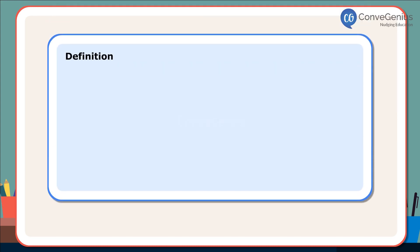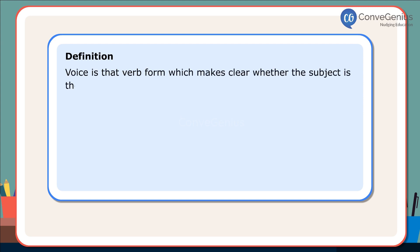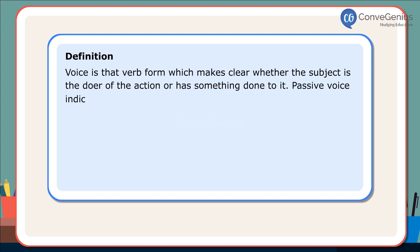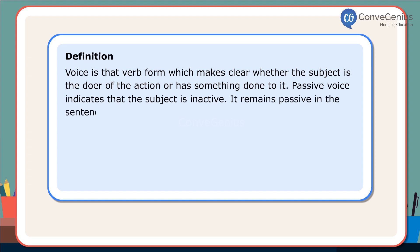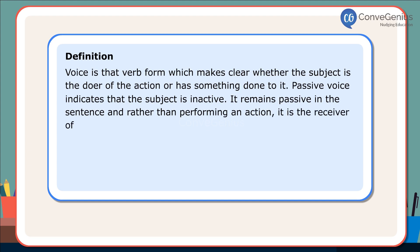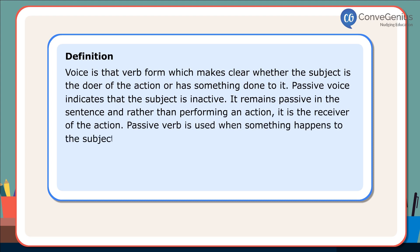Definition: Voice is that verb form which makes clear whether the subject is the doer of the action or has something done to it. Passive voice indicates that the subject is inactive — it remains passive in the sentence, and rather than performing an action, it is the receiver of the action.